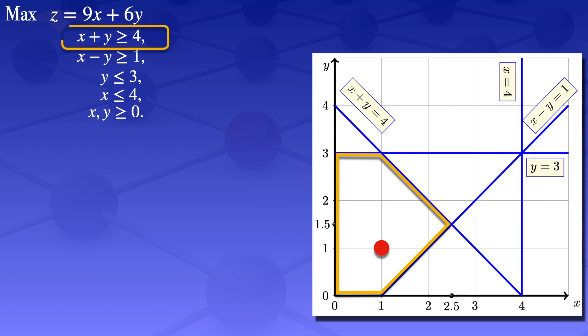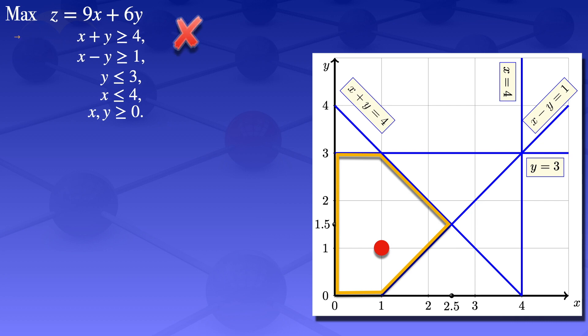Looking at the first constraint, x + y ≥ 4, with x = 1 and y = 1, we get x + y = 2. Is 2 ≥ 4? It's not. So this region has violated this constraint and cannot be the feasible region. There's no need to check the other constraints — it is already excluded.